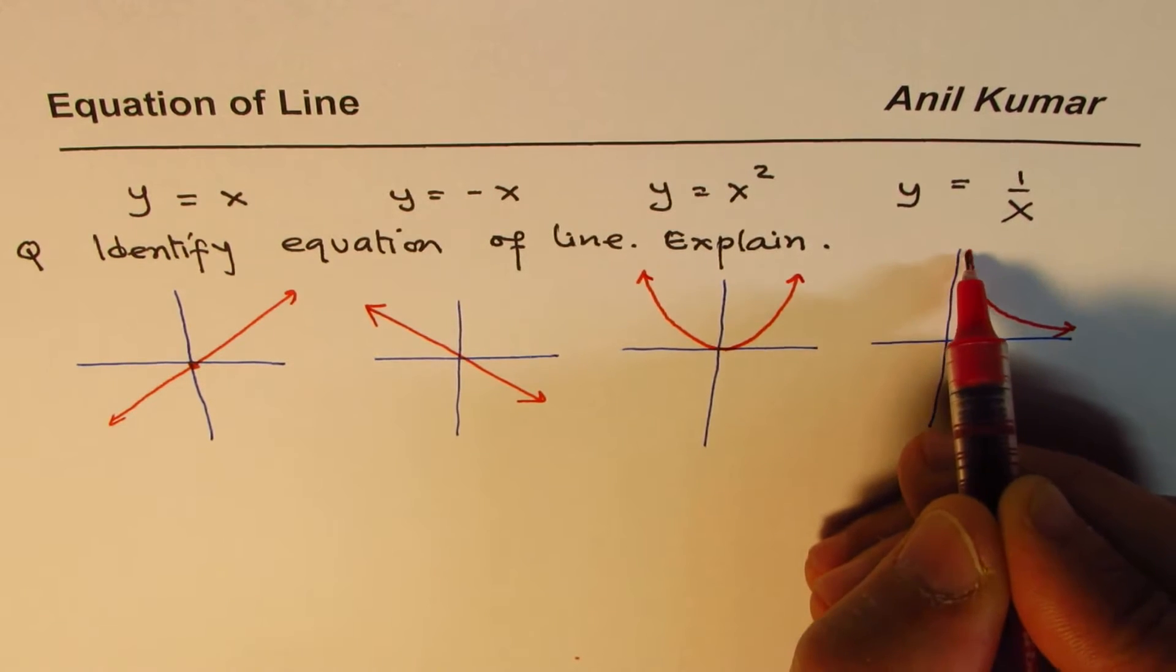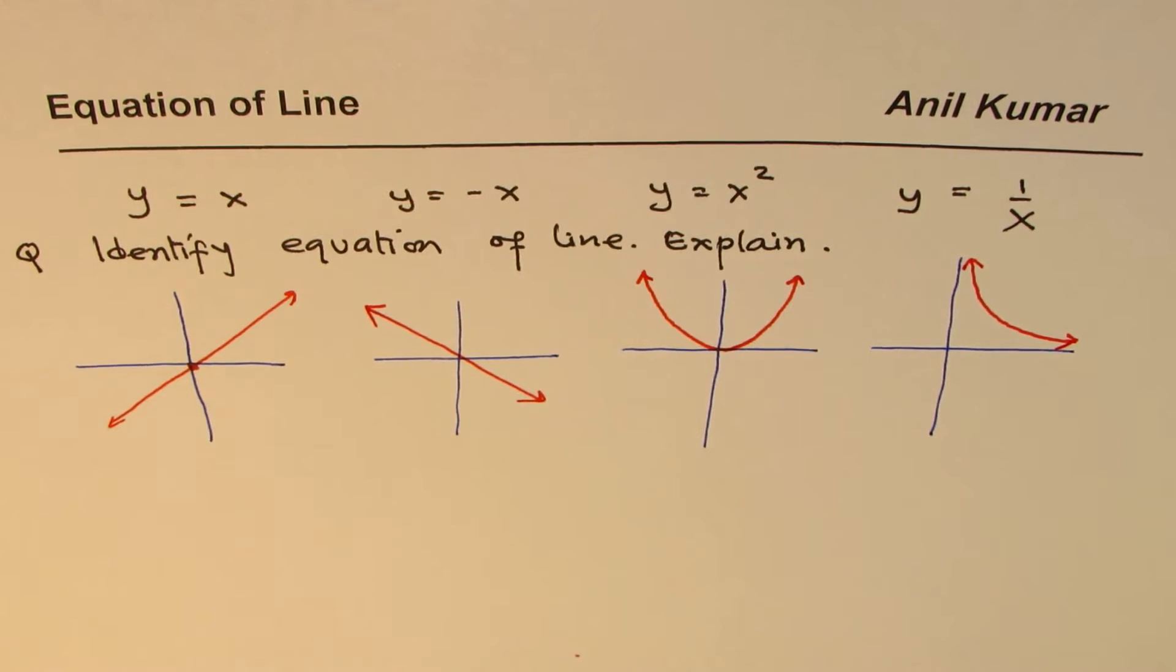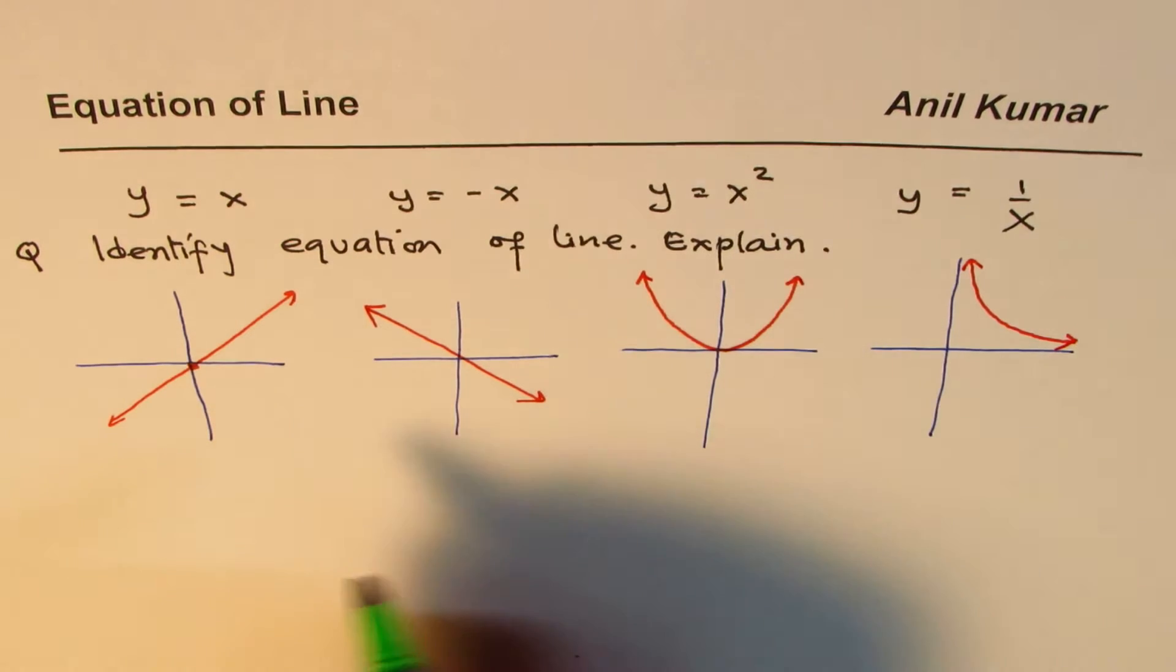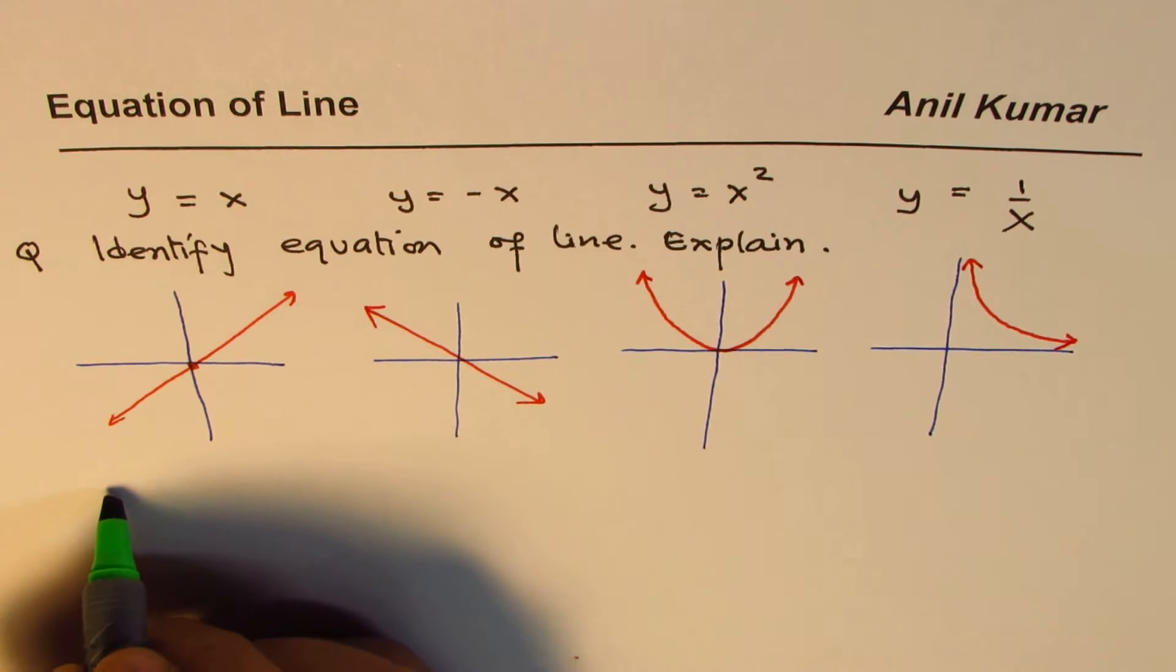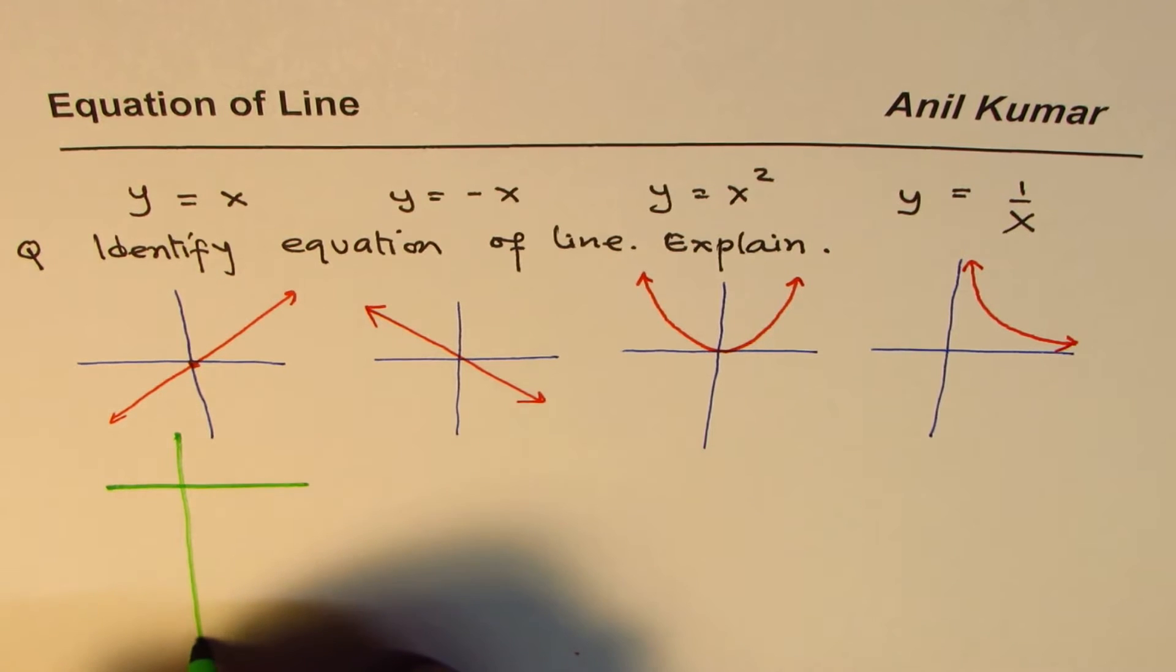Now from sketching the graph, it is kind of obvious that these two represent line and those two don't. That's one way to figure it out. The other way could be, we know that X could have any values. Based on the value of X, Y will have some value. We also treat them as functions.